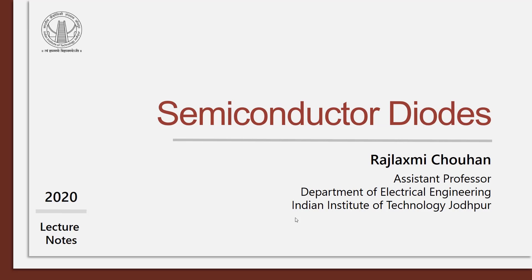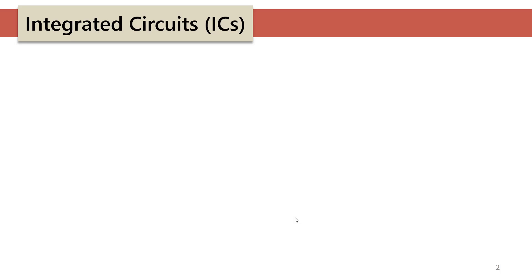A diode, however, is made up of two different materials. Any junction diode is made up of two different materials, and those materials are not conductors — they are semiconductors. Due to some mechanism, the flow of current is restricted in the opposite direction and is possible only in one direction. Before we go there, let's take a quick background on integrated circuits, or ICs.